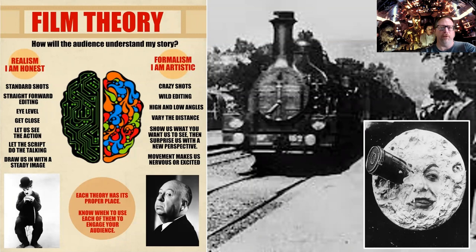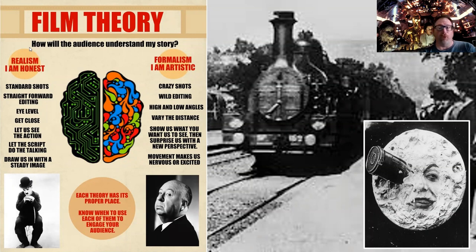When we look at film theory, the difference between early formalism and early realism comes down to this: how will the audience understand my story? Realism basically says: honest, standard shots, straightforward editing, eye level, get close, let us see the action, let the script do the talking, draw us in with a steady image. The formalist: crazy shots, wild editing, high and low angles, vary the distance, show us what they want to see and surprise us with a new perspective. The alien showing up — movie makes us nervous and excited. That really is the foundational difference between the two.